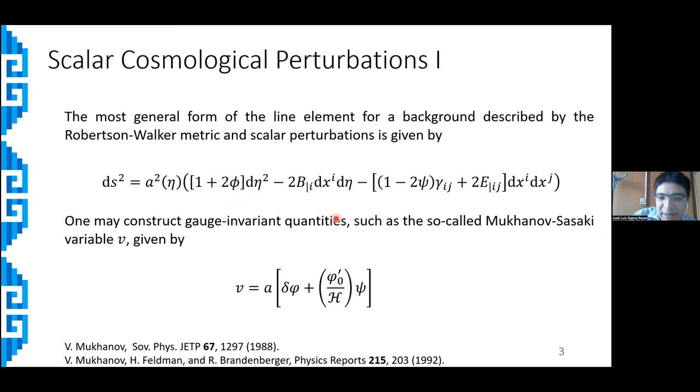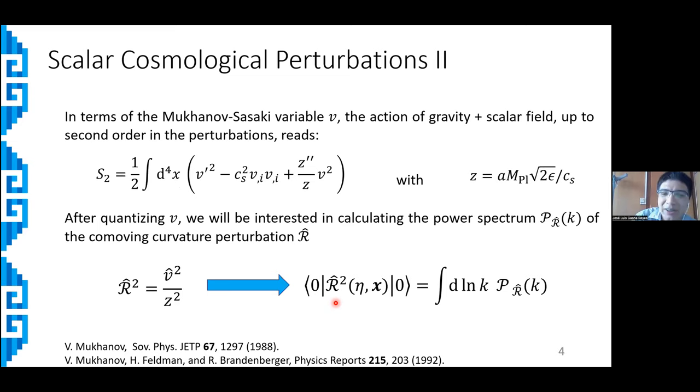construct gauge invariant quantities. One of these quantities is the so-called Mukhanov-Sasaki variable, which basically contains information from the perturbation of the scalar field, the unperturbed value, and the Hubble parameter in conformal time. We are particularly interested in this variable because the action of gravity plus scalar field up to second order in the perturbations has a particularly simple form, which is well studied.